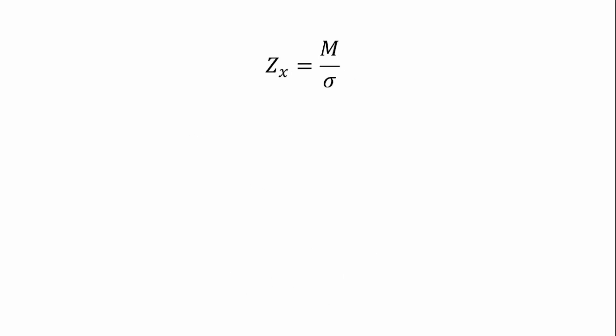The section modulus is equal to bending moment divided by the stress, or permissible stress in this case. Recall that permissible stress given in this question is 120 megapascals, and your bending moment given is 60 times 10^6 newton-millimeter.